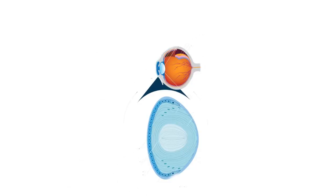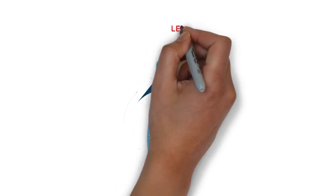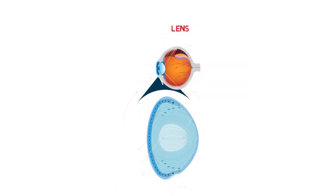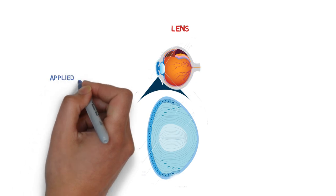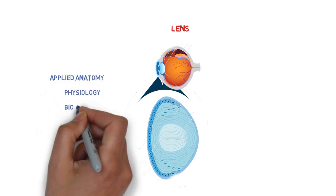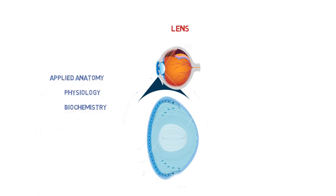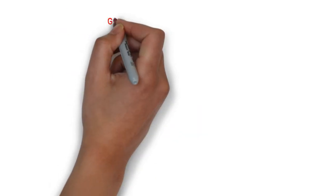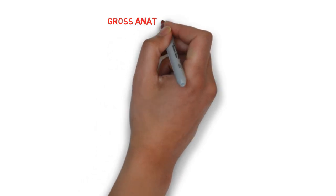Today we are going to study about the lens. In this lecture we are going to cover all the important points for your PG preparation, like applied anatomy, physiology, and biochemistry. This is very important because before going to start cataract, we must know the anatomy of the lens. So here we go from the gross anatomy of lens.